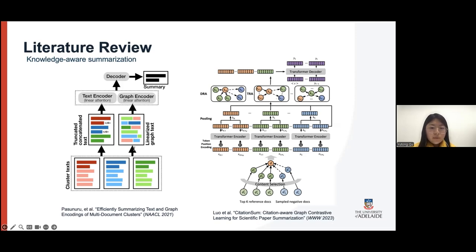And the right one, proposed in 2023, is a self-supervised citation-aware graph contrastive learning framework with pre-trained language model encoder. In this work, the paper reference information and the inter-document correlation was structured in the citation graphs, and those graphs were leveraged to guide the summary generation.